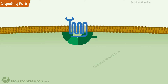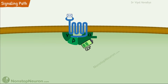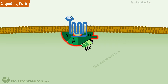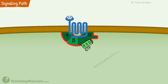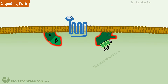Under resting conditions, the trimer of alpha, beta, and gamma subunits is associated with the receptor, and the alpha subunit is bound to GDP. The binding of a ligand with the receptor induces a conformational change that causes release of GDP and binding of GTP to the alpha subunit. This exchange in turn causes dissociation of the complex from the receptor and separation of the alpha subunit, leaving a free alpha subunit and a beta-gamma complex.